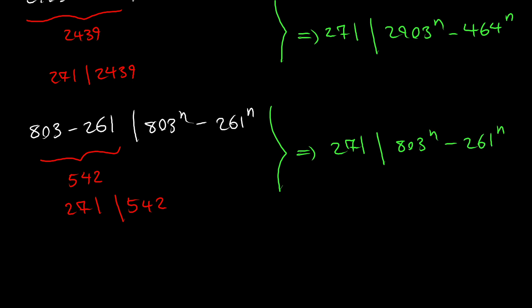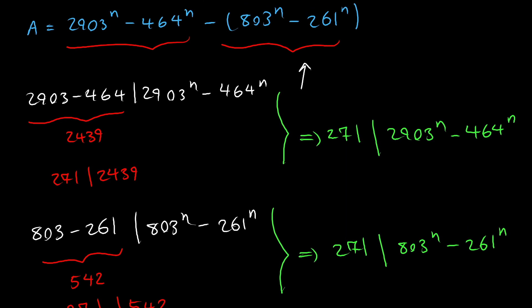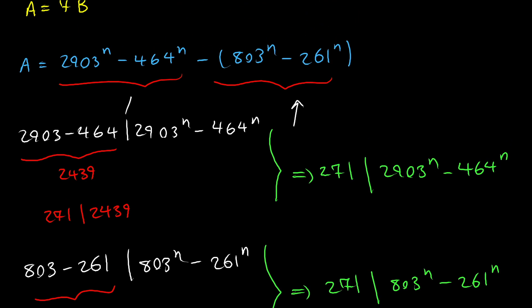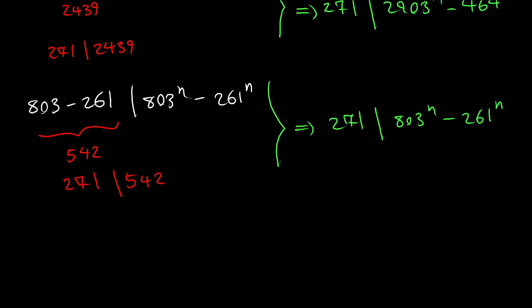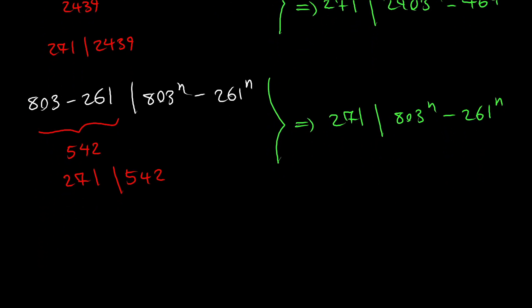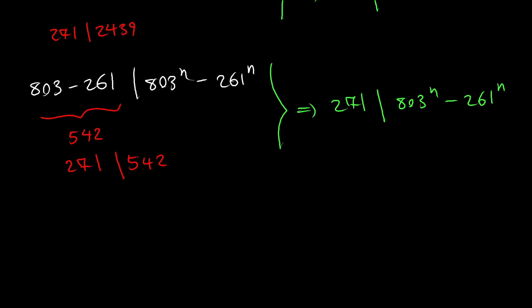So we've proved that both of these parts are divisible by 271. Therefore, a is divisible by 271, which means 271 divides a.